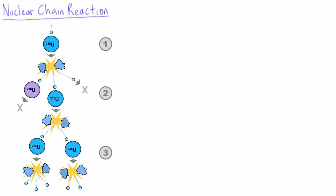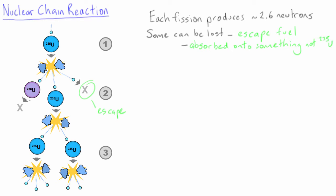The other key concept for understanding a nuclear reactor is the idea of a chain reaction. This is illustrated in the picture on the left. Remember that each fission reaction produces an average of 2.6 neutrons. Some of these neutrons can be lost. They might escape the fuel entirely, or they might be absorbed on something that is not uranium-235.